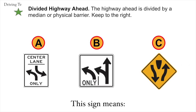Divided highway ahead. The highway ahead is divided by a median or physical barrier. Keep to the right. The correct answer is C. Divided highway ahead.